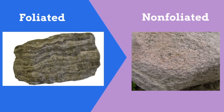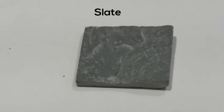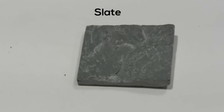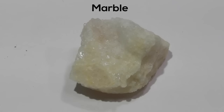Slate has very, very small minerals. It is considered foliated and its parent rock is shale. Marble has fine to medium crystals. Its parent rock is limestone and is considered non-foliated.